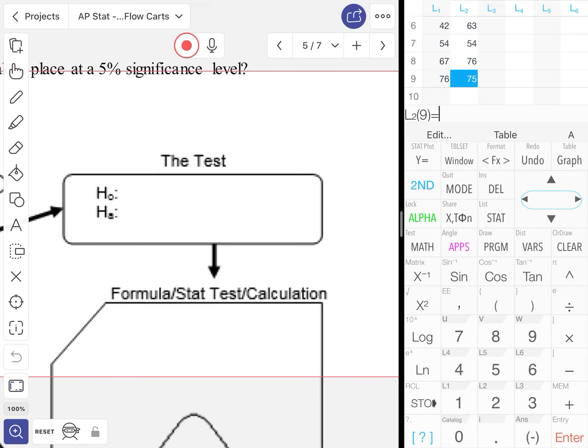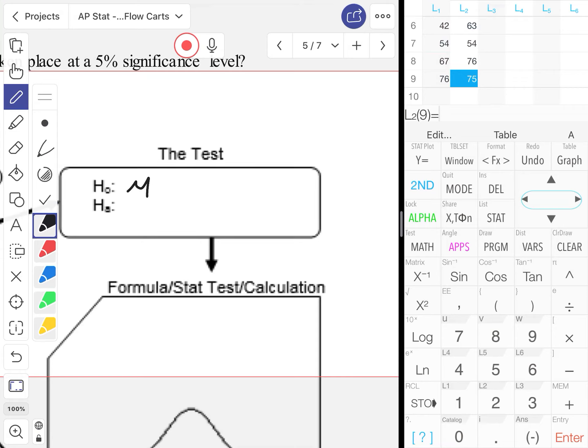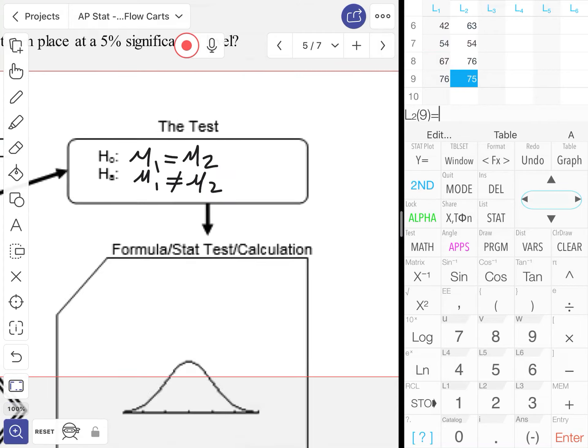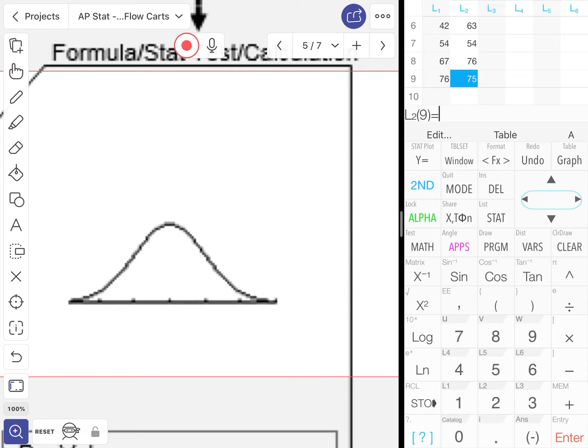So μ₁ equal to μ₂ is our null, μ₁ not equal to μ₂ would be our alternative. That corresponds to a two-tailed test.